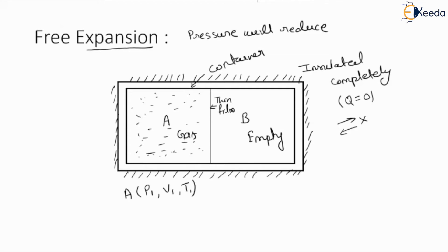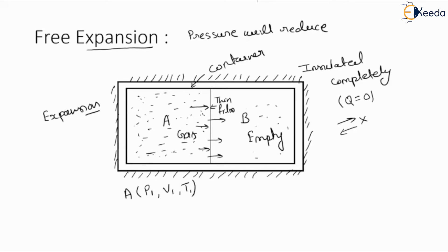Side A is filled with high-pressure gas. Now, this high-pressure gas is trying to expand, and if this high-pressure gas breaks the thin film, the gas will try to fill the empty side B and fill up the complete space of B. Expansion is happening because of the high pressure of the gas — we are not using any other device. Because of the breakage of the thin film, this gas is going to expand.